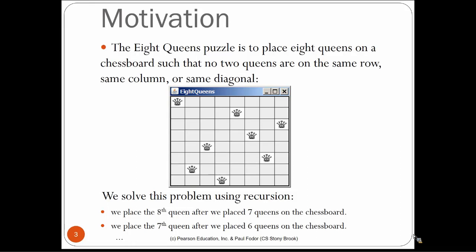That methodology says: try to place seven queens and then place the last eighth queen such that it doesn't attack the previously placed seven queens. How to place seven queens? The same idea applies — try to place six queens and then place the seventh queen so it doesn't attack the previous six. This is a recursive problem: up to the last queen, every problem decomposes into placing n minus one queens and then placing the last queen. To place n queens, we need to place n minus one — a smaller problem of the same type — and then put the last queen.